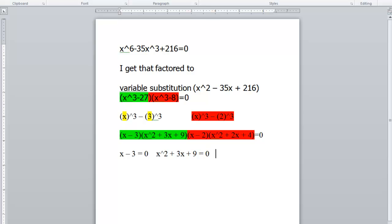We have x minus 2 is equal to 0. And we have x squared plus 2x plus 4 equals 0.